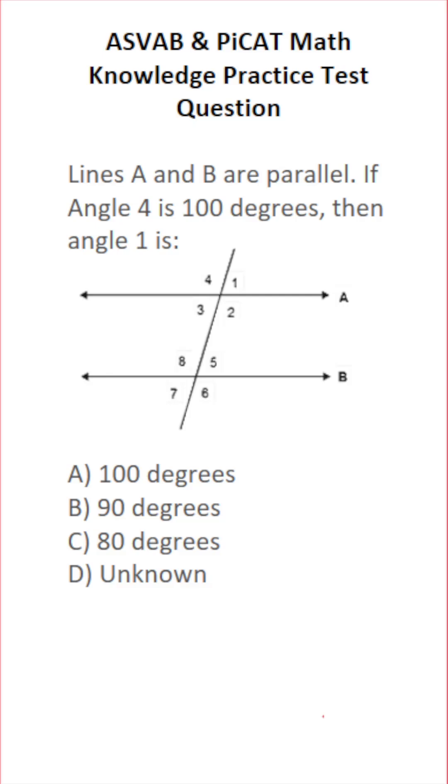But let's look at angle 4 and angle 1. You can see that they make a straight line together. In other words, they're supplementary angles. And we should know that supplementary angles add up to 180 degrees, which is the amount of degrees in a straight line.